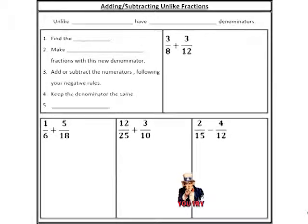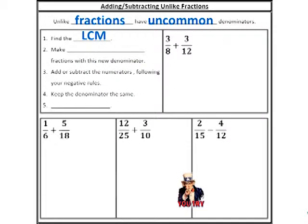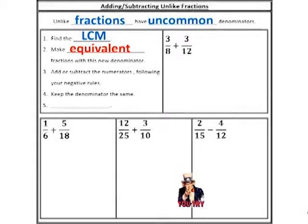Now, what we do know about like fractions — they have common denominators. So logically, unlike fractions would have uncommon denominators. Instead of having three and three as denominators, we have three and seven, so they are different. We can't just jump to adding or subtracting the numerator. What we need to do first is find the LCM — the lowest common multiple, also known as the lowest common denominator. It's the smallest denominator that these two fractions could possibly have in common. Once we do that, we make equivalent fractions with this new denominator, then add or subtract the numerators following your negative rules. Simplify is always the last step — always, always, always.